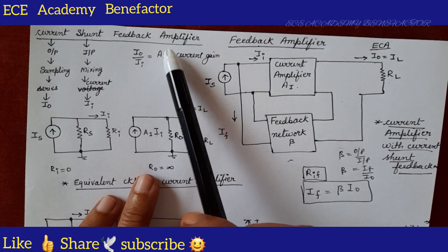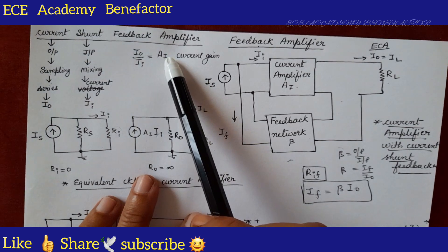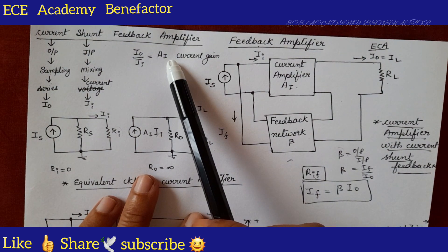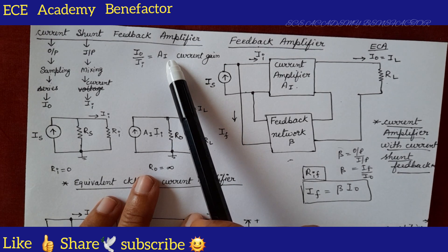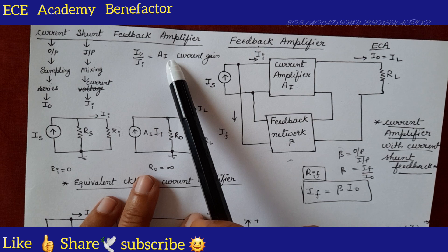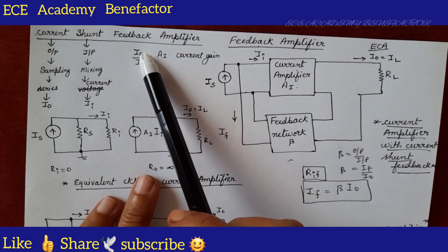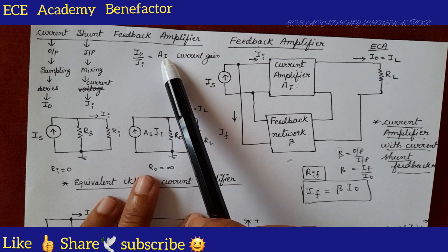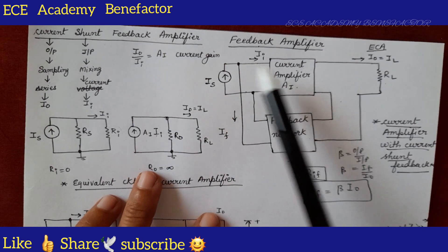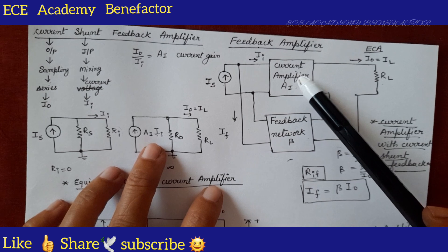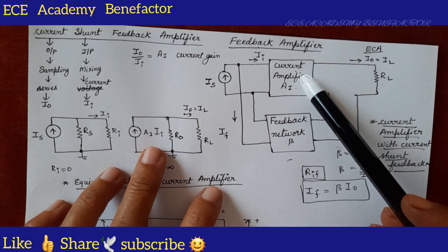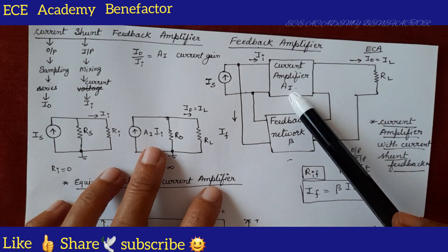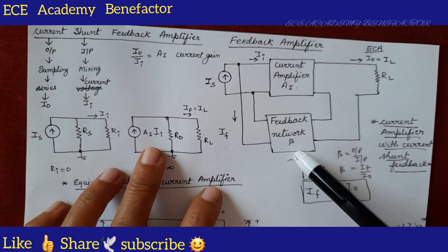The basic amplifier to be used is decided by this ratio. AI means we need to take a current amplifier. As you know, there are four basic amplifiers: voltage amplifier, current amplifier, transconductance amplifier, and transresistance amplifier. The ratio of I-naught by II is AI, current gain, so we have to go for a current amplifier of gain AI and a feedback network of ratio beta.